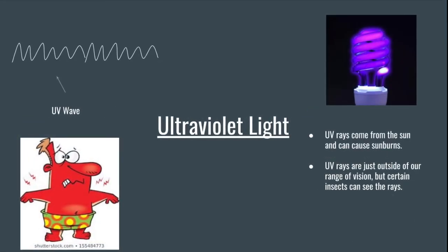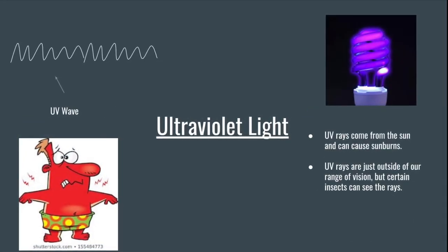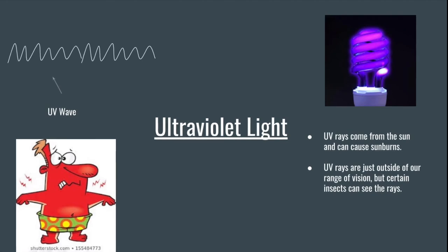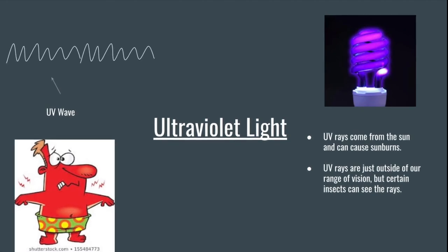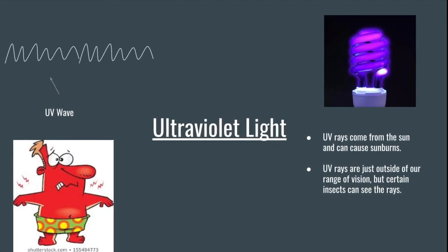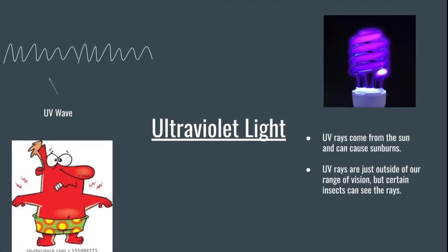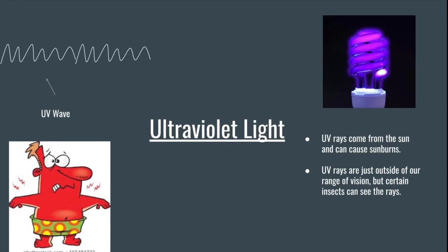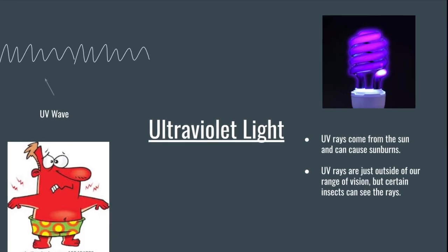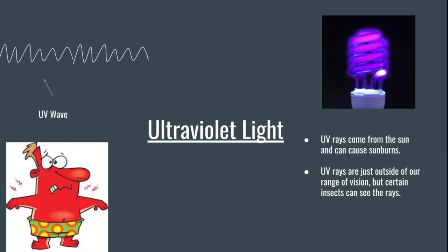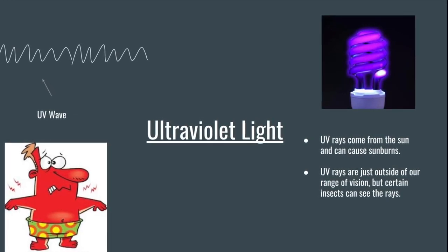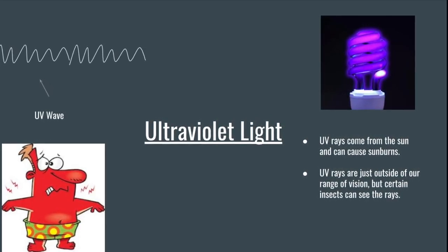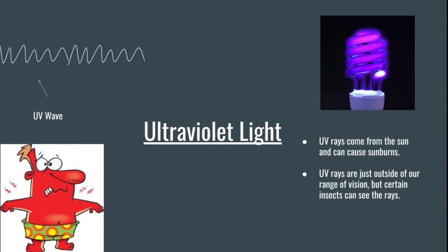Ultraviolet light rays have wavelengths from 380 nm to 10 nm and frequencies from 1,120 Hz to 480 Hz. Ultraviolet rays come from the sun and cause sunburns. They can also be used to sterilize things and kill bacteria.